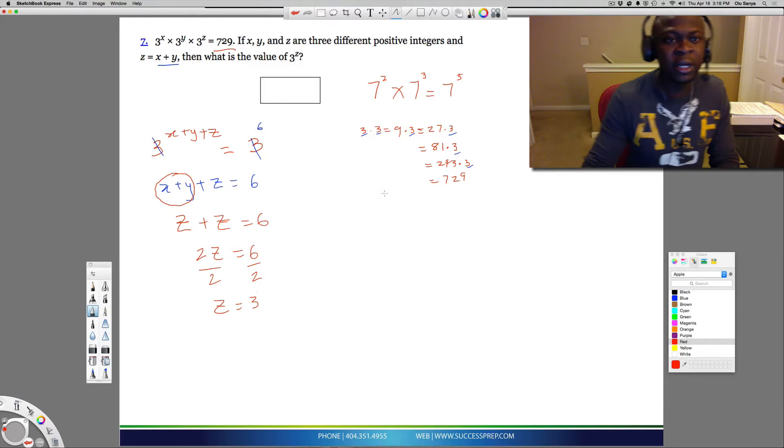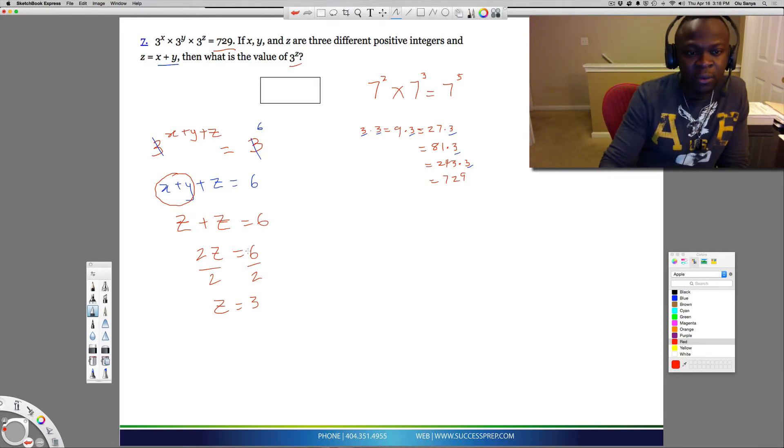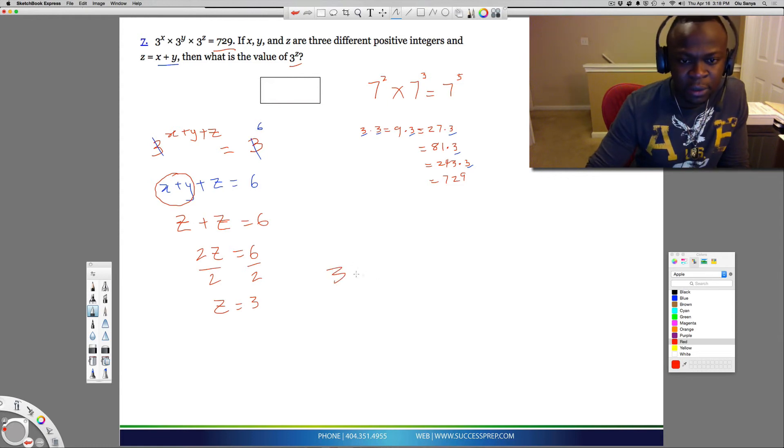Now the question here at the end of the day is asking for 3 to the z. Well, now that we know the z is 3, the answer here is just going to be 3 to the 3. And again, the way we do that is 3 times 3 times 3. 3 times 3 times 3 gives us 27. You know, 3 times 3 is 9 times 3 is 27. So the answer here is 27.